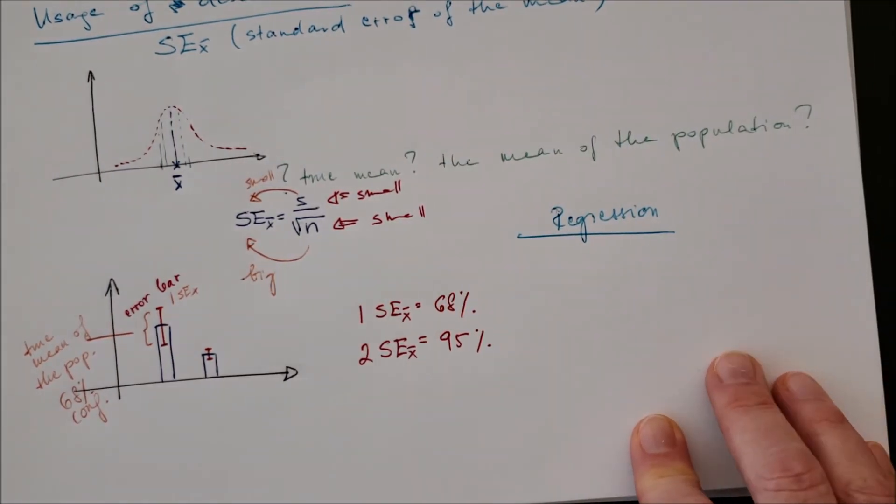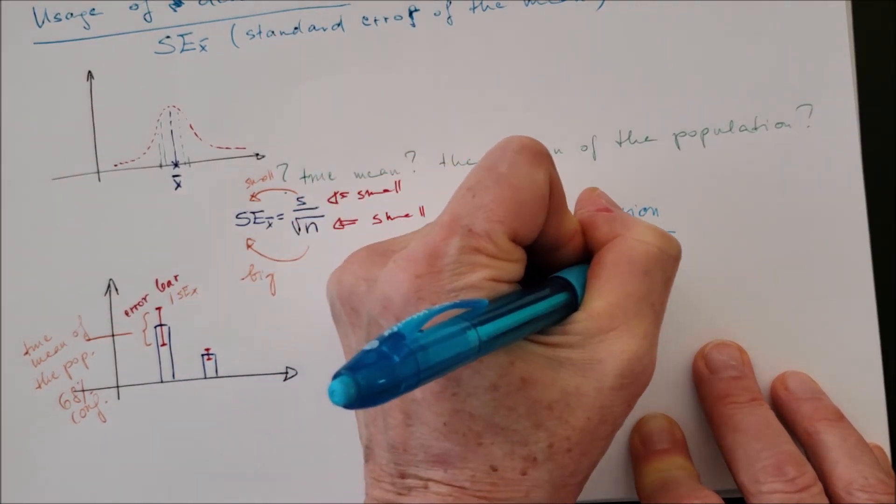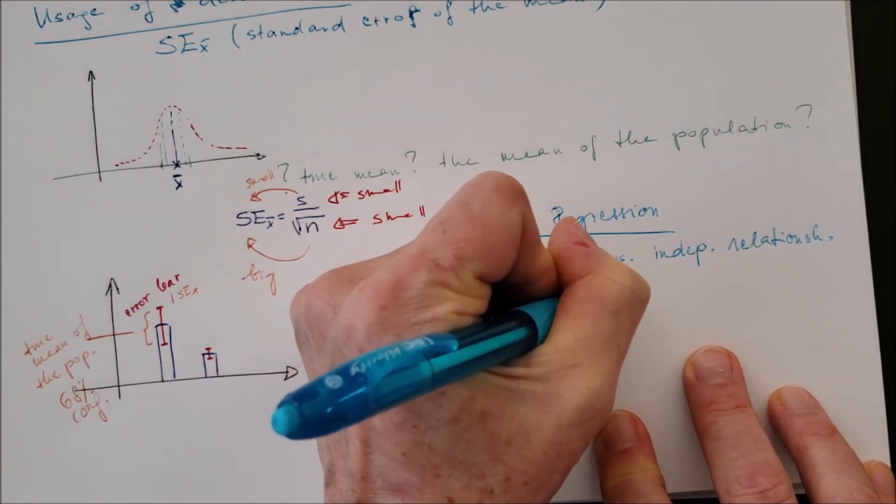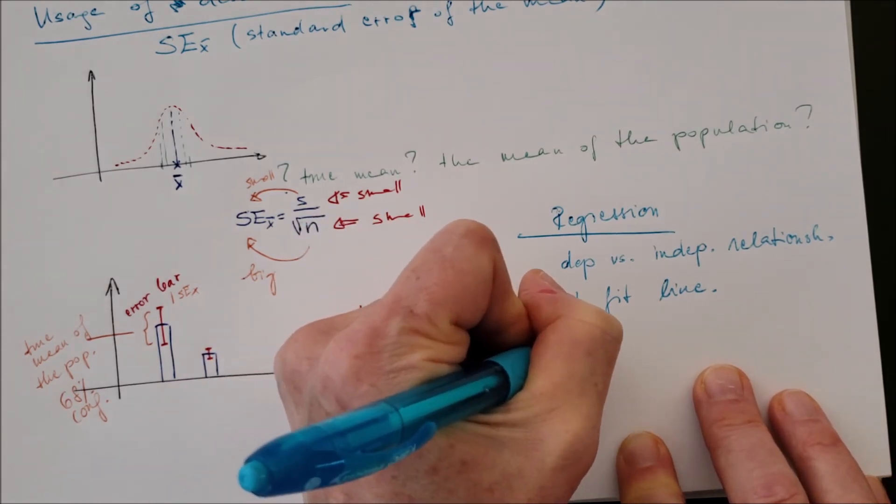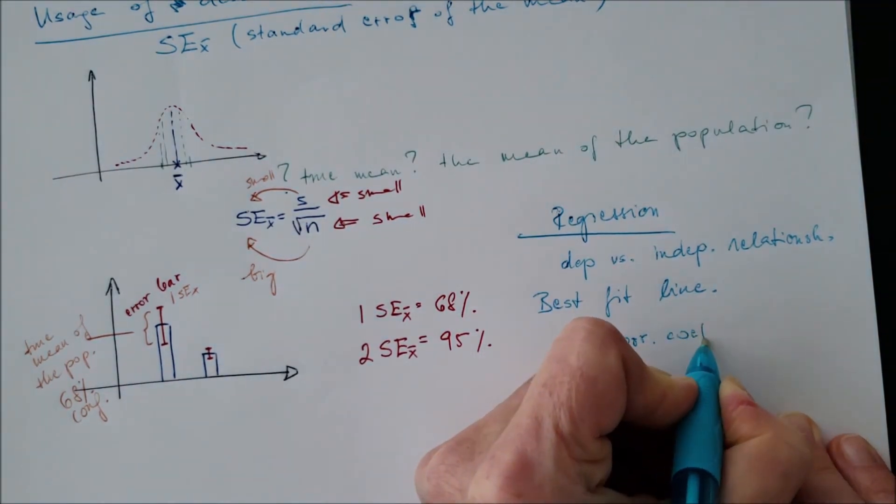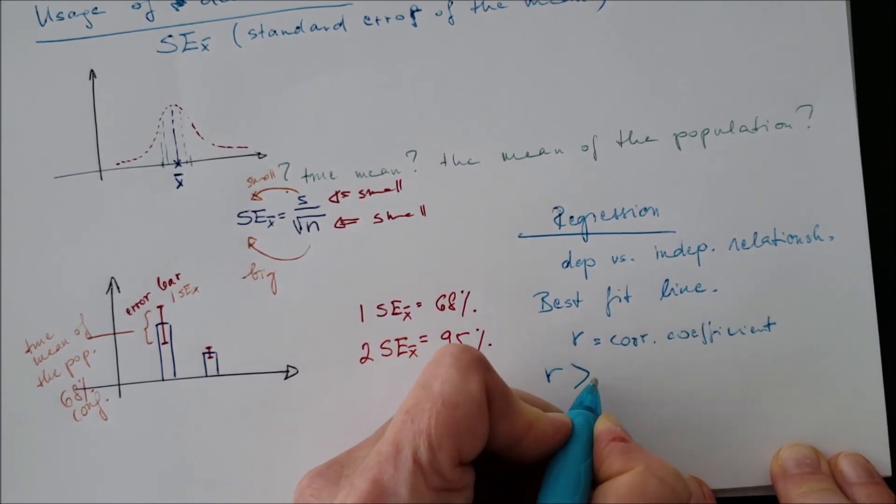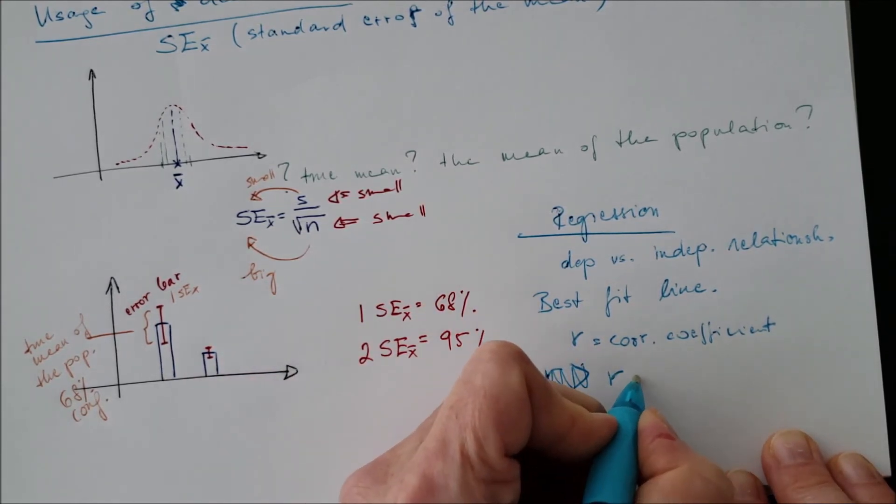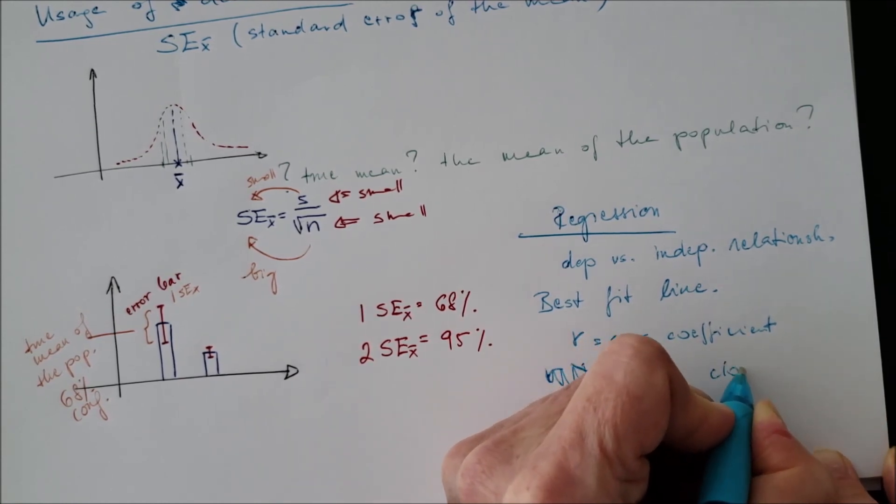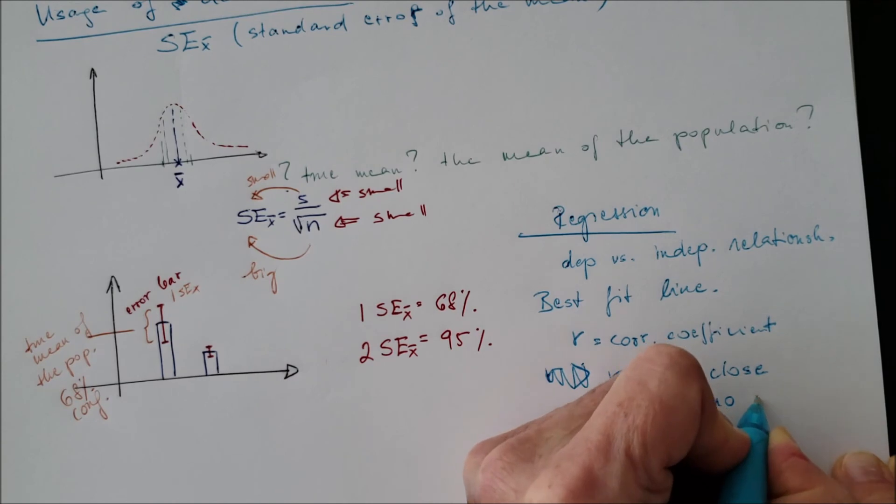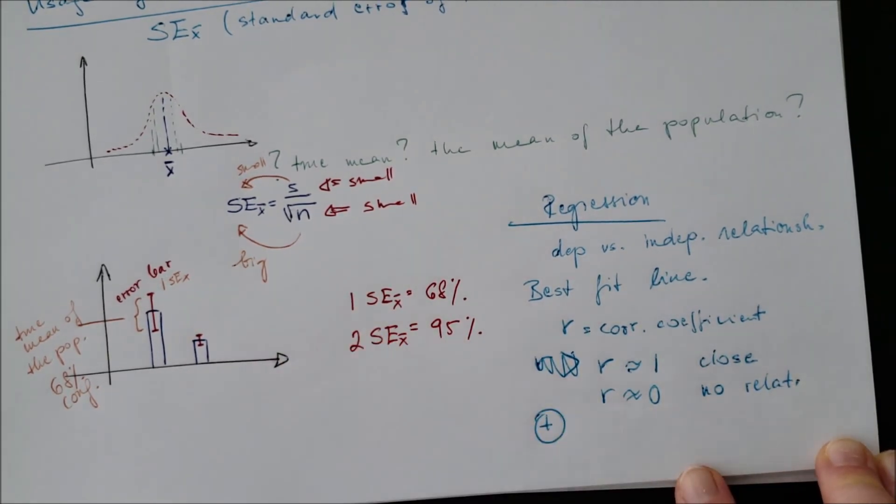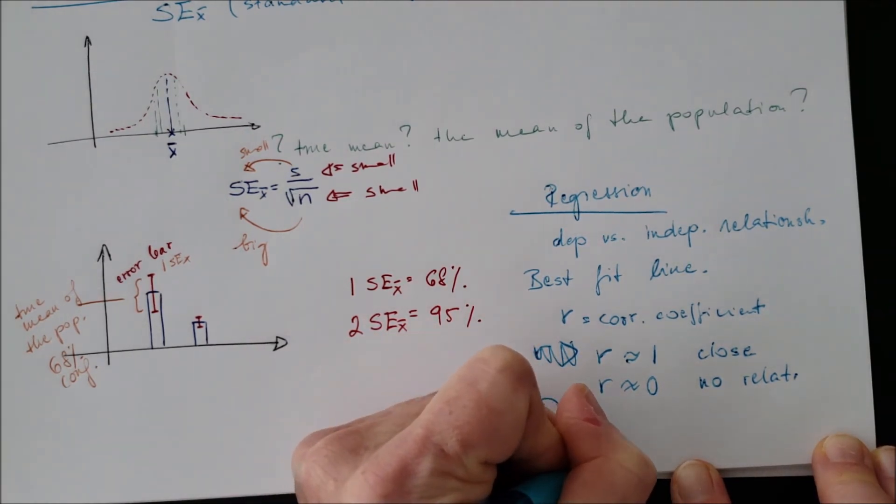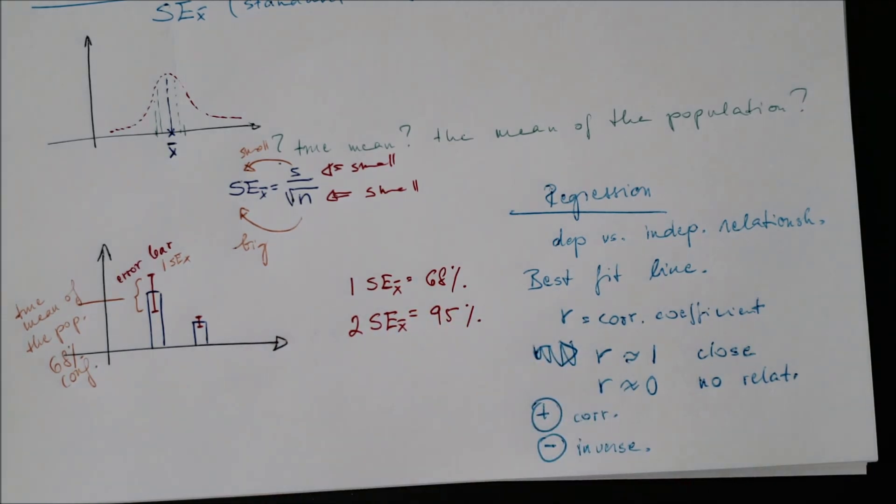And the last point is the regression. When we are graphing, we want to just figure out how the independent and the dependent variables relate to each other. We use the best fit line or the regression line. The symbol for this is the R. If the R is close to 1, that means the two variables are close related to each other. If the R is zero, there's no correlation between the variables. If it's positive, the correlation is positive. And if it's negative, the correlation is negative. So inverse relationship happens between the two variables.